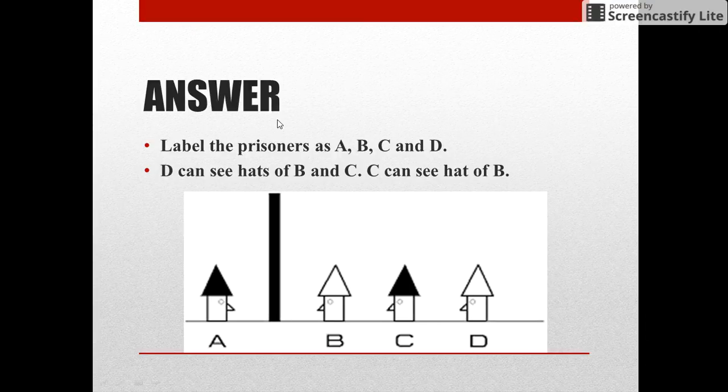Let us see the solution. We first label all four prisoners as A, B, C, and D, where A is standing behind the screen.